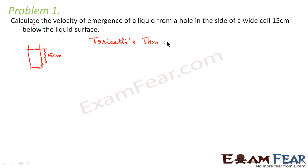Torricelli's theorem states that the velocity with which a liquid emerges from a hole is equal to root over 2gh. So V is equal to root over 2gh.